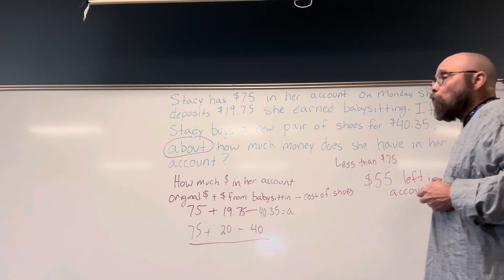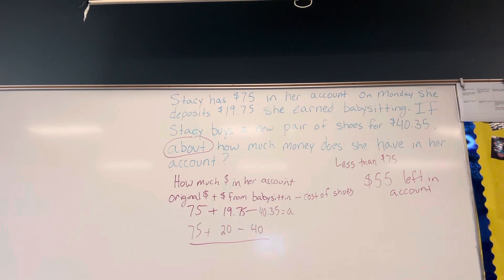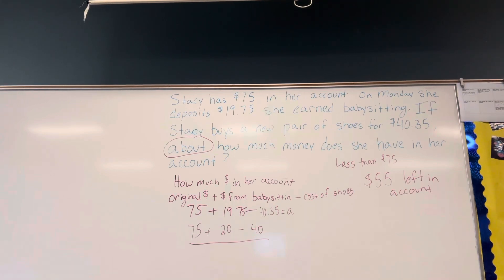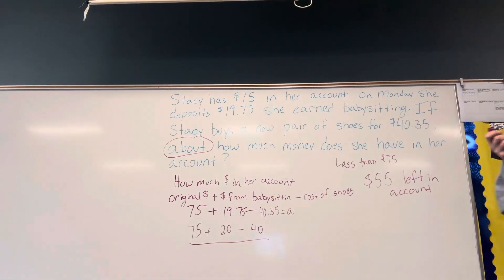I want to go back and re-read the problem, because I want to make sure that the answer I've selected makes sense with what the problem says. Always at the end, re-read the problem and see if your answer makes sense — don't just read it once at the speed of light, answer it, and move on. Stacey has $75 in her account. On Monday she deposits $19.75 she earned babysitting. If Stacey buys a new pair of shoes for $40.35, about how much money does she have in her account? Well, that seems to make sense. We did an 'about,' and we know she spent more than she added in, so all that seems pretty logical.